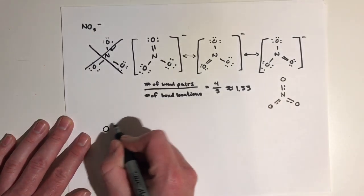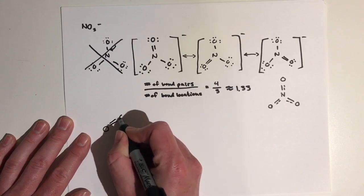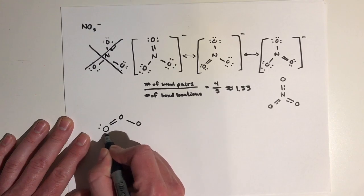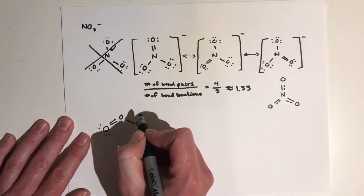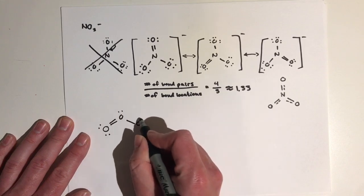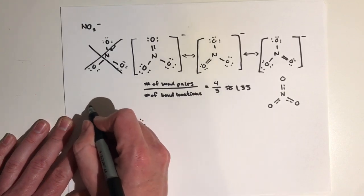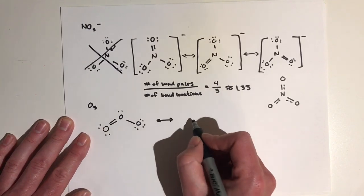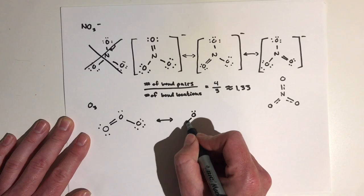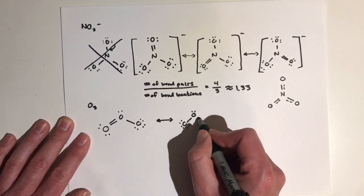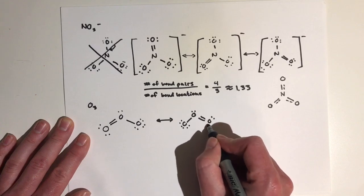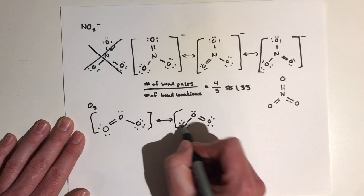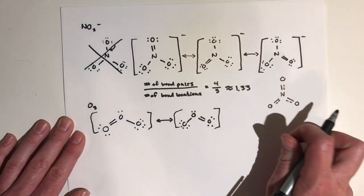Another good example is ozone, which is O3. You've got a double bond that could go on one side or the other side, and your Lewis structure would look like this. Both of these are valid resonance structures for the ozone molecule.